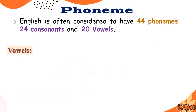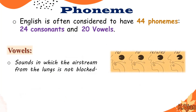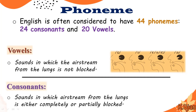Each language has a different number of phonemes. In English there are 44 phonemes: 24 consonant phonemes and 20 vowel phonemes. Vowel sounds are those in which the air stream from the lungs is not blocked — the mouth is open while we are pronouncing these phonemes. However, consonant sounds are those in which the air stream from the lungs is either completely or partially blocked, as in /b/, /p/, /m/.